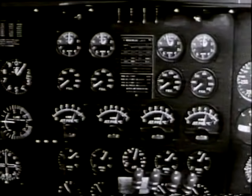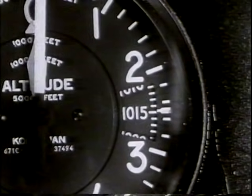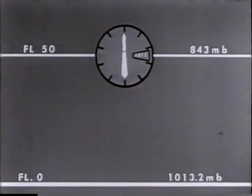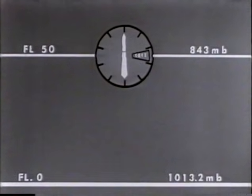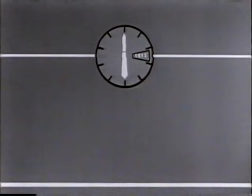Let us now see how the pilot obtains these three indications from his altimeter. The altimeter is provided with an adjustable pressure scale. If it is set to 1,013.2, the altimeter will indicate zero height at flight level zero. This is because 1,013.2 is the pressure at flight level zero. If the altimeter is raised to flight level 50, it will sense a pressure of 843 millibars and will indicate a vertical distance of 5,000 feet above flight level zero. If the altimeter indication is kept constant, the flight level will be maintained.